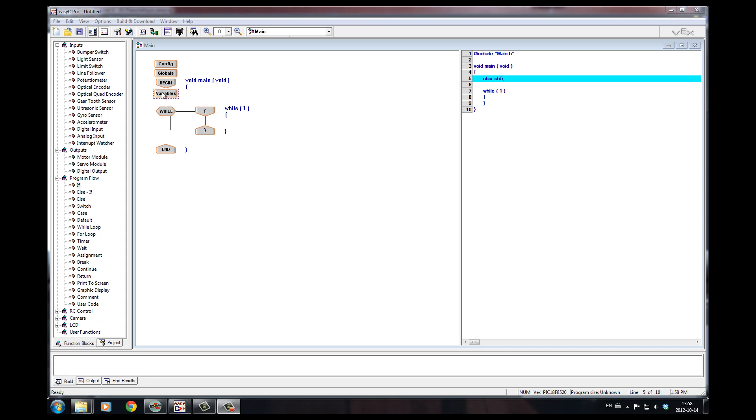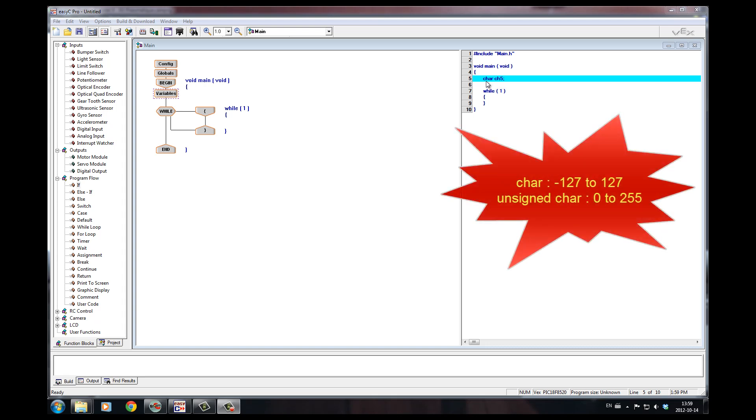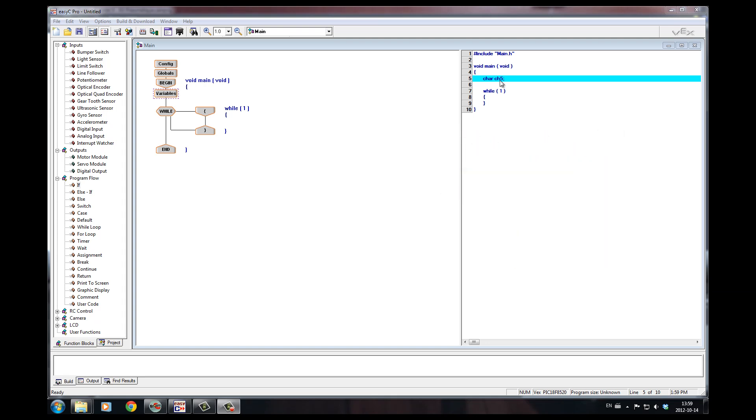And then you have to create a variable. This one I've called CH5 for channel 5. I've made it a char, but I should have done unsigned char, because the values are either 0, 127, or 255. But for this example, CH5 is the variable into which I will read the state of channel 5.